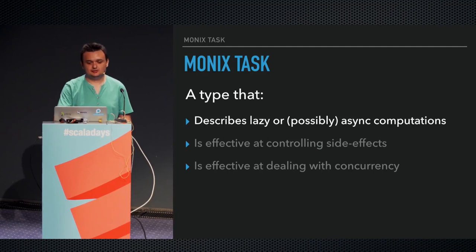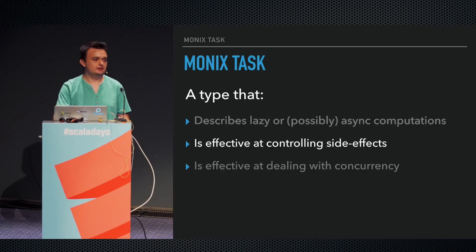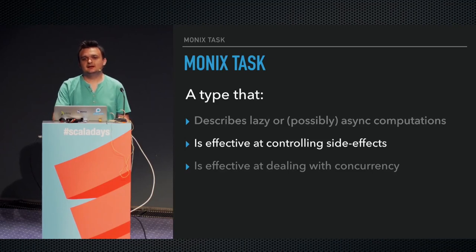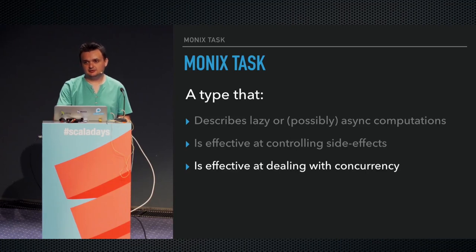Task is a type for describing lazy, possibly asynchronous computation. It's effective at dealing with and controlling side effects. For those familiar with Haskell, the Monix task is basically equivalent to the IO type in Haskell, and it's effective at dealing with concurrency.